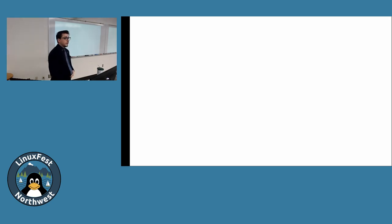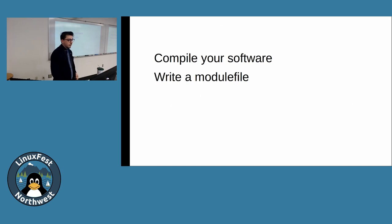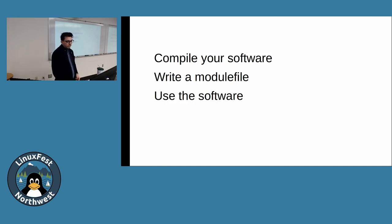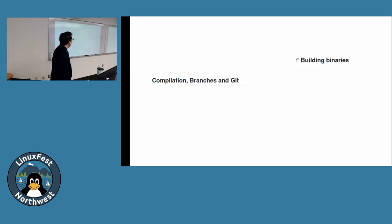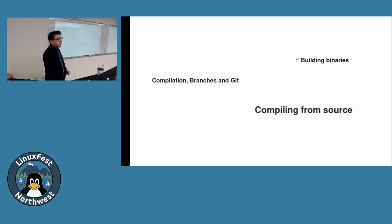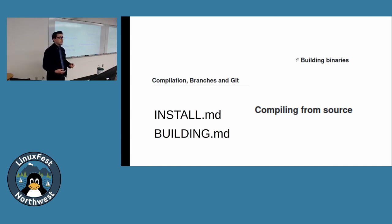Now that we've set up modules, let's put some software in it. Step one: get and compile your software. Step two: write a single module file to tell modules where to find that software and how to modify your environment. Step three: use the software — and using it is so easy you can learn it in one minute. Compiling the software is different for every project, but normally projects today have GitHub. Look for a section named 'compilation,' 'building binaries,' 'compiling from source,' or instructions in a separate file named INSTALL or BUILDING.